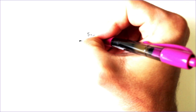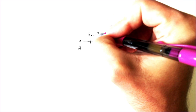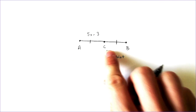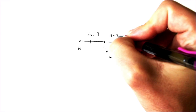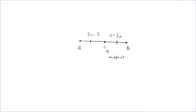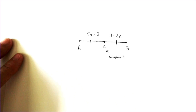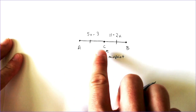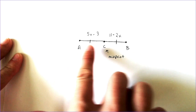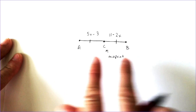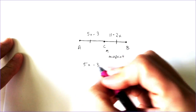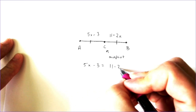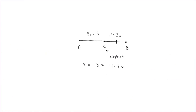So if you were told that the part from A to C was 5x minus 3, and you were told from C to B was 11 minus 2x, you could use that information to your advantage. Because point C is the middle, that means it is cut directly in half into two equal portions, so you can set both halves equal to each other.